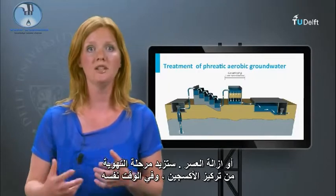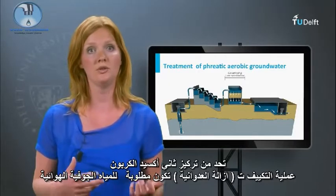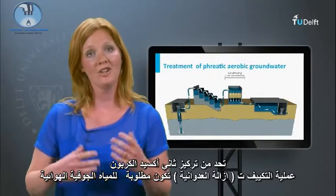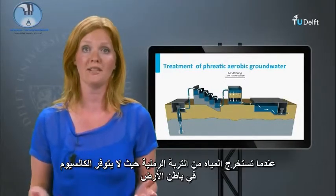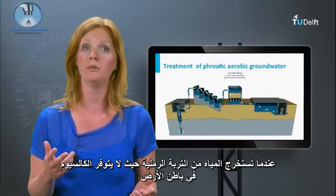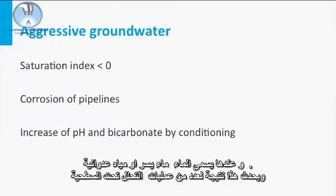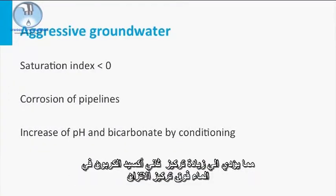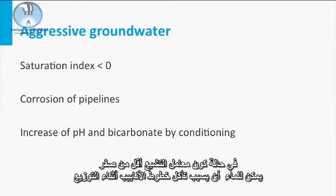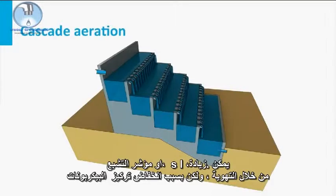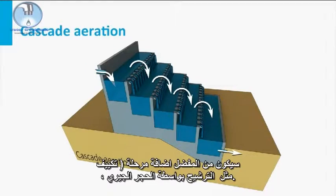The treatment scheme for aerobic groundwater is generally very simple and consists of aeration with optional subsequent conditioning or softening. The aeration phase will increase the oxygen concentration and at the same time reduce the carbon dioxide concentration. Conditioning is desired when aerobic groundwater is abstracted from sandy soils where no calcium is available, producing soft or aggressive water. The saturation index (SI) can be increased through aeration, but because of low bicarbonate concentrations, it may still be recommendable to apply a conditioning step such as limestone filtration.